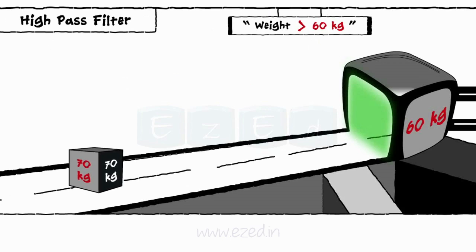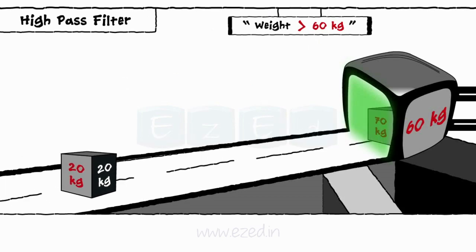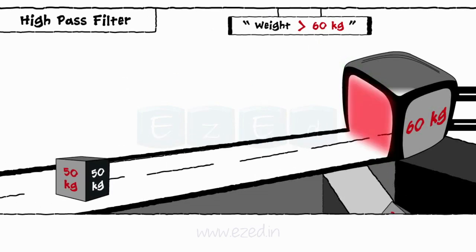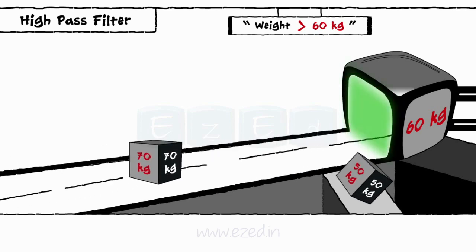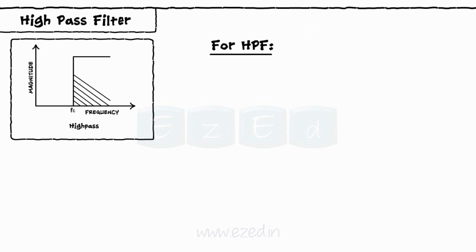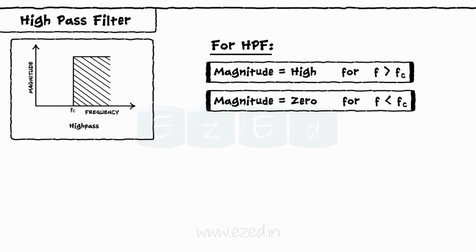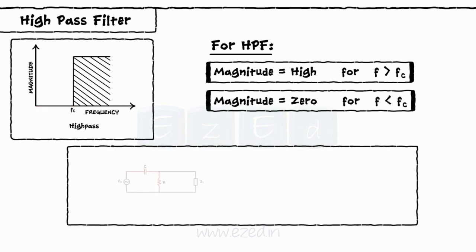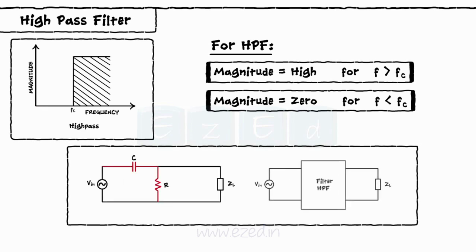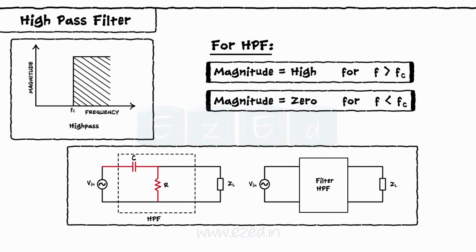Exactly opposite to this is a high pass filter. This filter passes high frequency signals and blocks low frequency signals. Thus, in a high pass filter, we get high magnitude for all frequencies above cutoff frequency and zero magnitude for all frequencies below cutoff frequency. A high pass filter is implemented in electronic circuits by connecting a capacitor and a resistor in series.